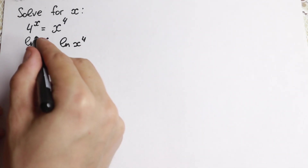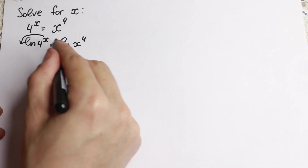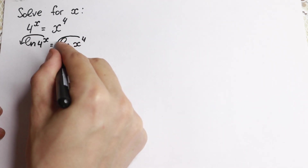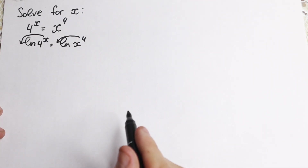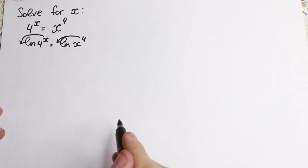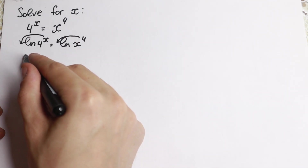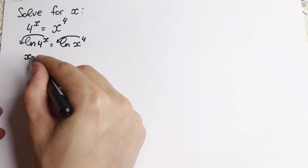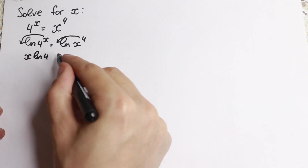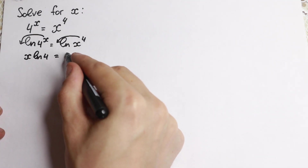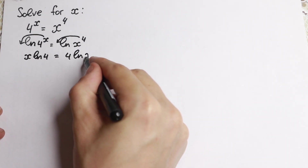Right now let's use the log property: x goes here and 4 goes here at the beginning. So what we'll have as a result — we will have x times natural log 4 equal to 4 times natural log x.